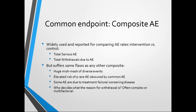Another common problem in adverse events reviews is that composite measures are very commonly reported in trial reports. These include composite endpoints such as the total number of serious adverse events in the intervention group compared to the control group, or total withdrawals due to adverse events in the arms of the study. We should approach these composites with caution. Even though they're very frequently reported, they suffer the same flaws as any other composite measure—and in some ways they're even worse, because the total number of withdrawals is a mishmash of really diverse events.